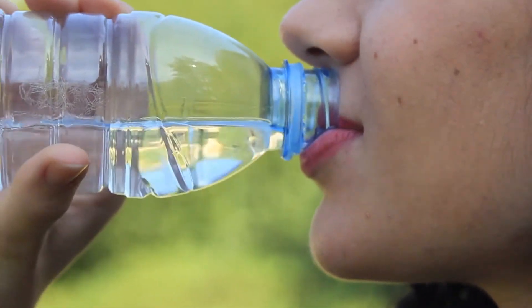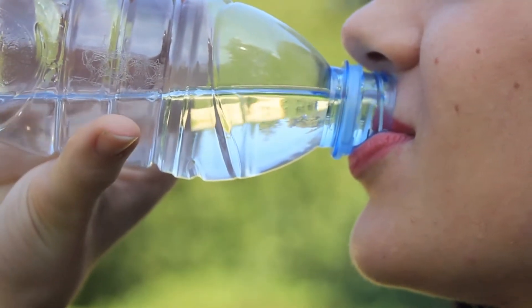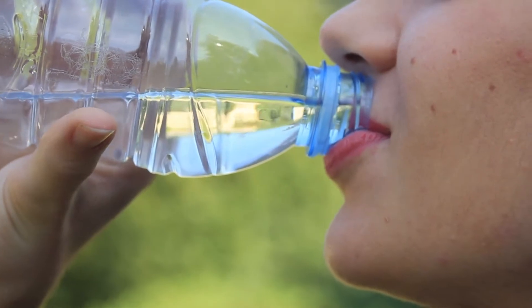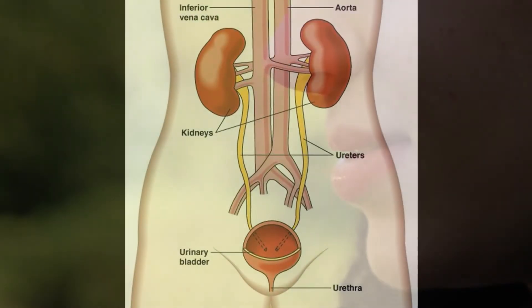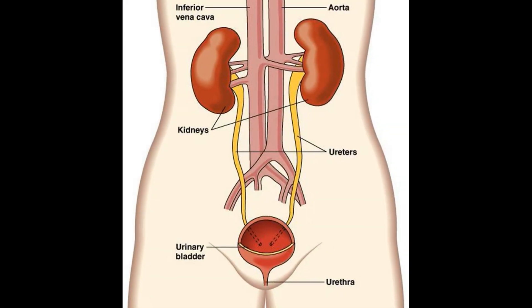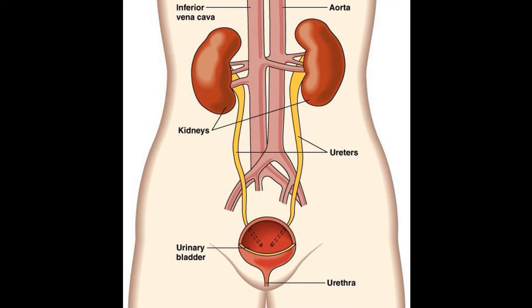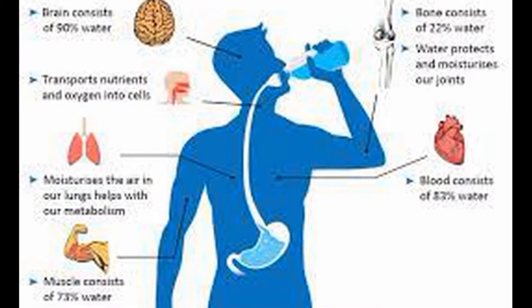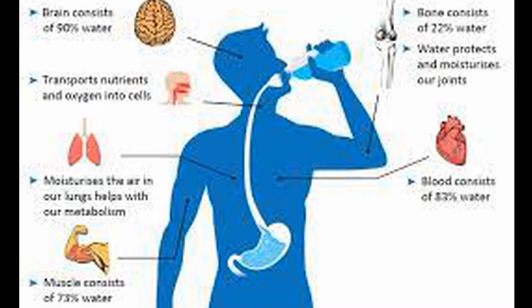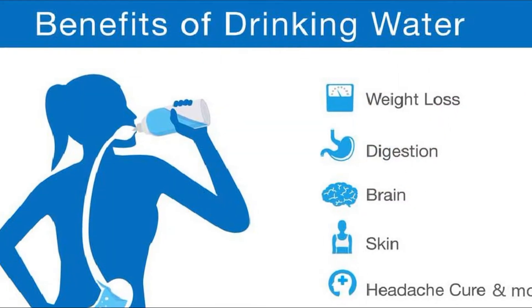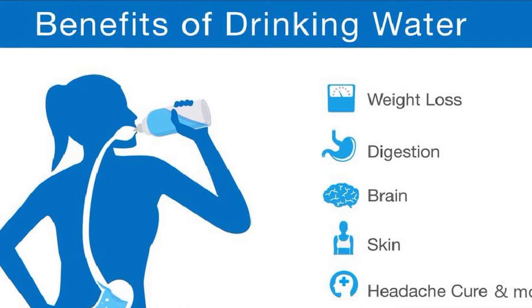Water: Water is taken in with food and beverages in large quantities. Plenty of water in the body is essential for washing out the nitrogenous waste. The body retains some water required as a normal constituent while the excess water is removed from the body in different ways.